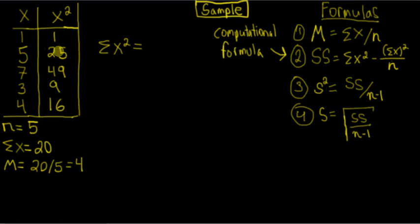Our next step is to calculate the sum of X squared. And so the sum of X squared is going to be simply the sum of these values here: 1 plus 25 plus 49 plus 9 plus 16. That's going to give us 100.